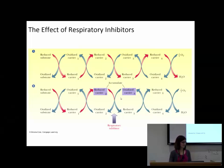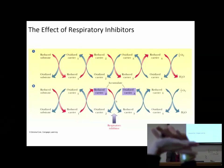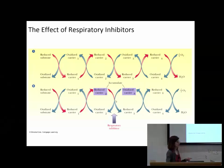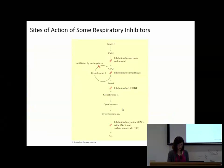Is the inhibition only at that one site, or everywhere? This one particular respiratory inhibitor only blocks this one reaction, so only those two species would get accumulated.